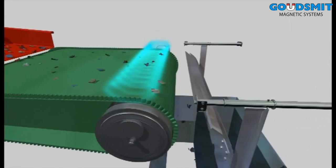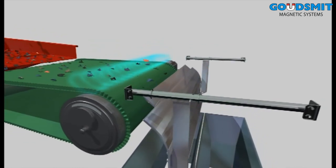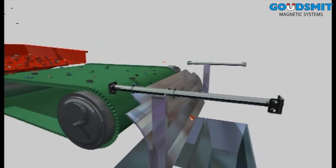In this way, the eddy current separator not only separates the big particles, but it can also separate the smaller ones. The smallest particles being those of half a millimeter.